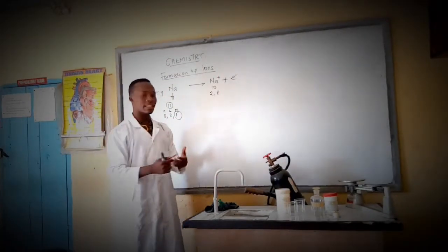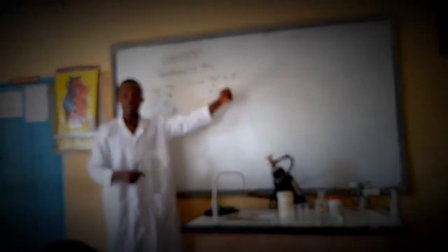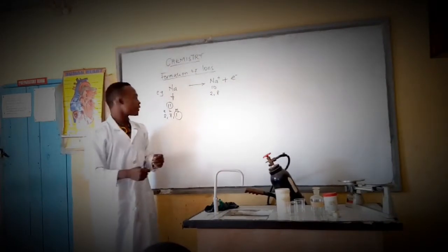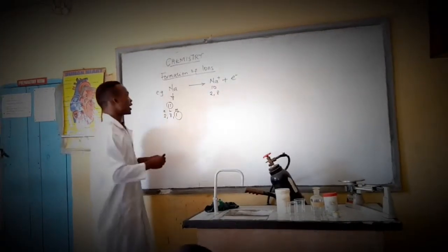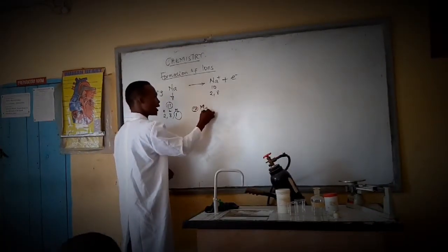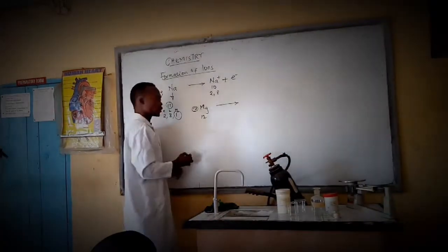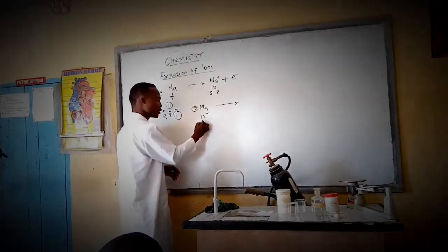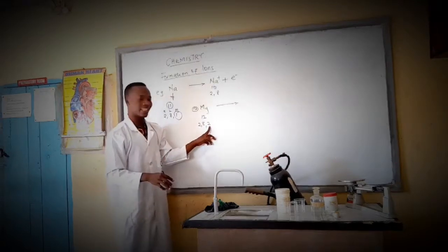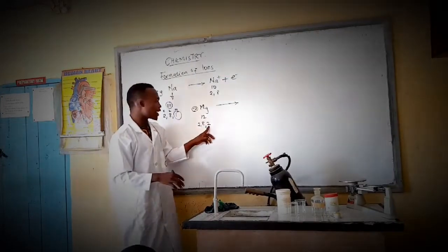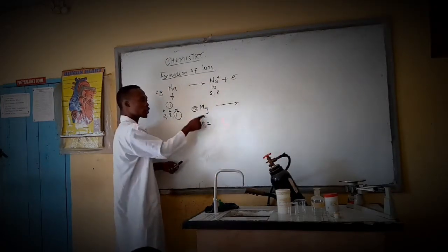Sodium is a metal because it has the properties of a metal. One property of a metal is that it has between 1 to 3 electrons in the valence shell. Another example of a metal is magnesium. Magnesium has 12 electrons, giving a configuration of 2, 8, 2. It has 2 electrons in the outermost shell and is not balanced, so it gives away those 2 electrons to form an ion.